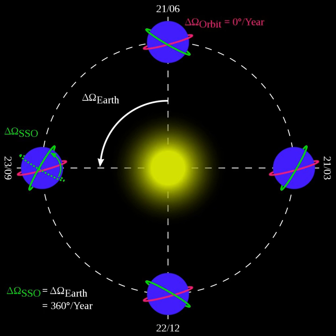A sun-synchronous orbit, also called a heliosynchronous orbit, is a nearly polar orbit around a planet, in which the satellite passes over any given point of the planet's surface at the same local mean solar time.